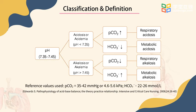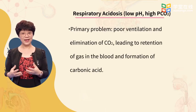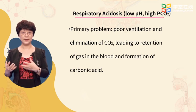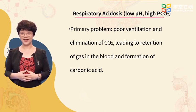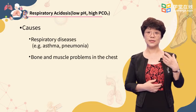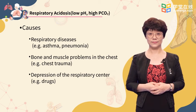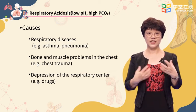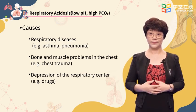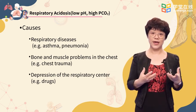Let's consider the specific types. First, respiratory acidosis is characterized by low blood pH and high blood carbon dioxide. The primary problem in this type of acidosis is poor ventilation and elimination of carbon dioxide, leading to its retention in the blood and formation of carbonic acid. Causes include respiratory diseases causing carbon dioxide retention, like chronic obstructive pulmonary disease, bone and muscle problems in the chest like chest trauma, and anything that would depress the respiratory centers in the brain, like drugs.